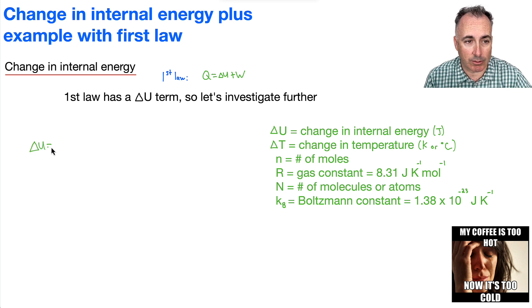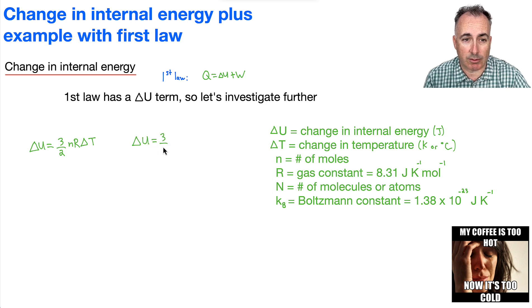It goes delta U equals 3 halves N R delta T. There's also a version that goes like this: delta U equals 3 halves, except this time it's N times kB, with this little lowercase b, also still delta T. Both of these are in the data booklet.